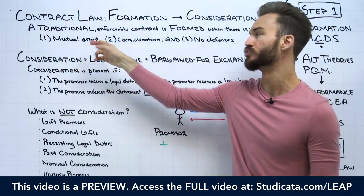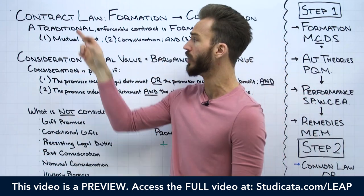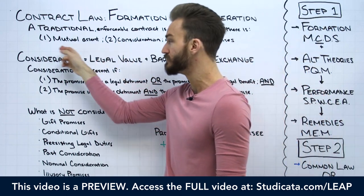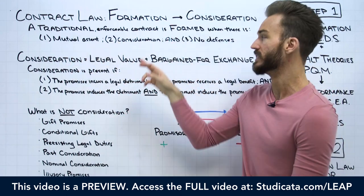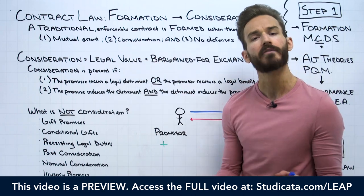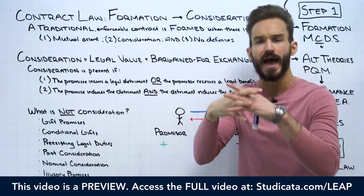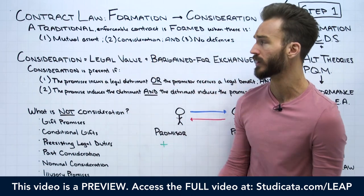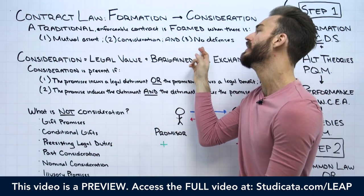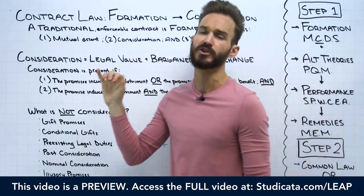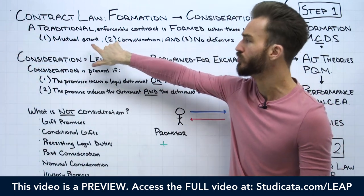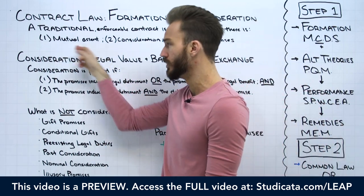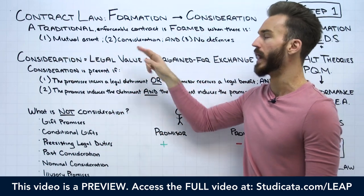The only question left in our traditional enforceable contract formation analysis is whether this mutual assent — this offer and acceptance — is supported by consideration. If we have an offer and an acceptance and that agreement is supported by consideration, we have a traditional enforceable contract, unless it could be invalidated by a possible defense to formation, which we'll talk about in future videos.